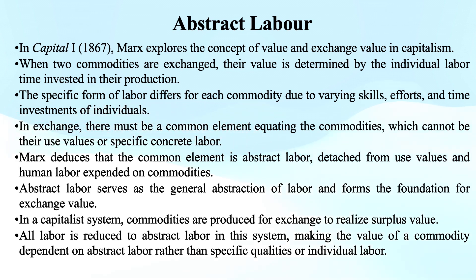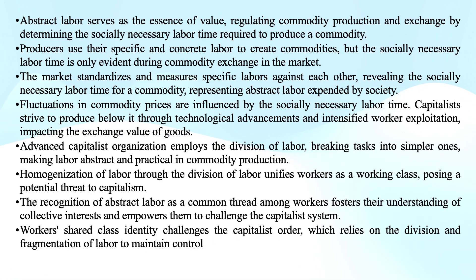In a capitalist system where commodities are produced for exchange to realise surplus value, all labour is reduced to abstract labour. This means that the value of a commodity is ultimately determined by the abstract labour invested in its production, rather than the specific qualities of the product or the individual labour of the producer. Marx's analysis reveals that abstract labour serves as the essence of value, regulating commodity production and exchange by acting as a measure of value.